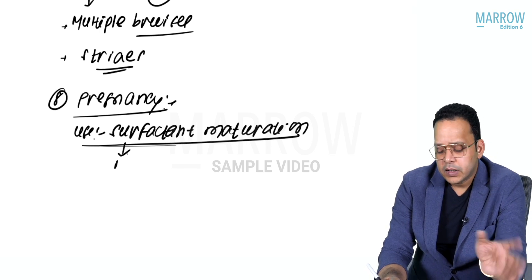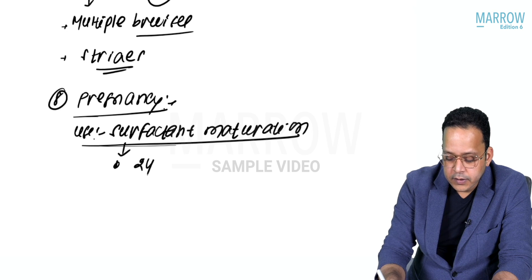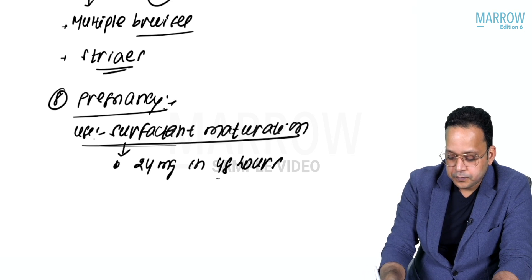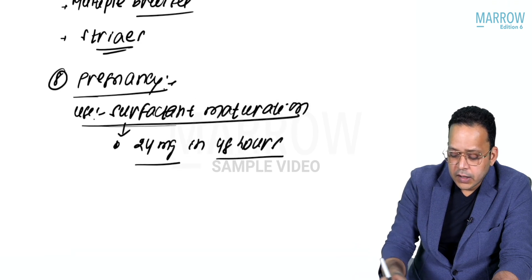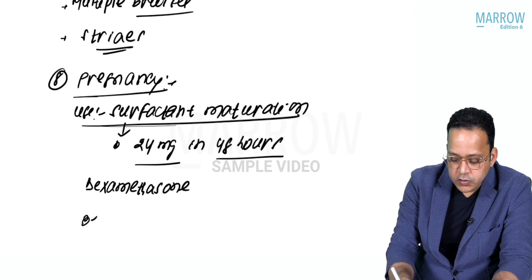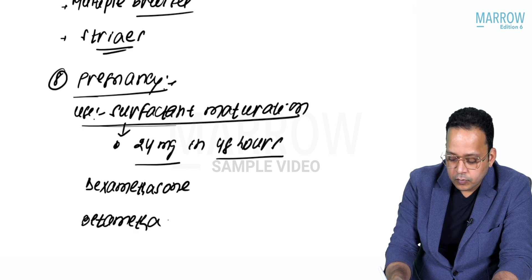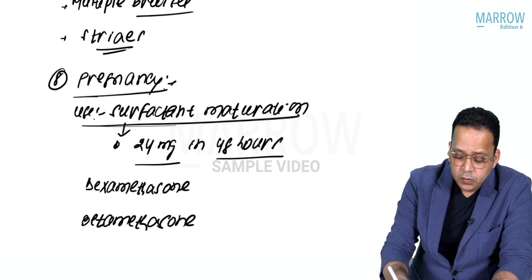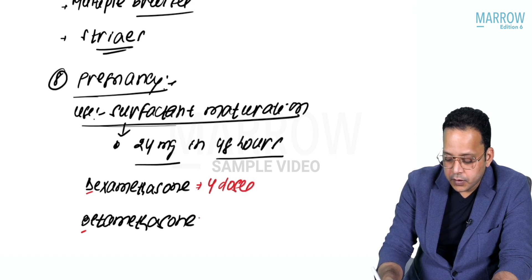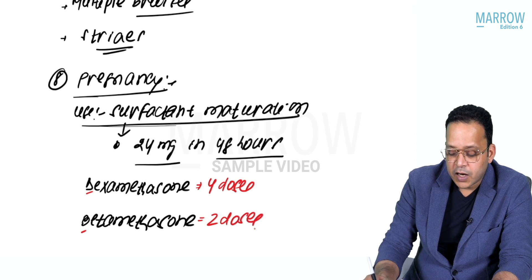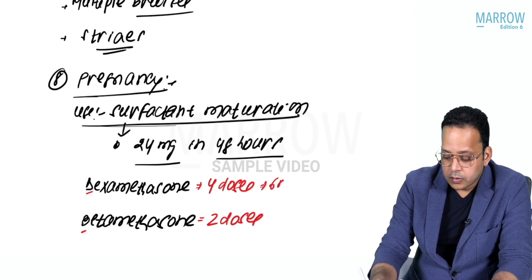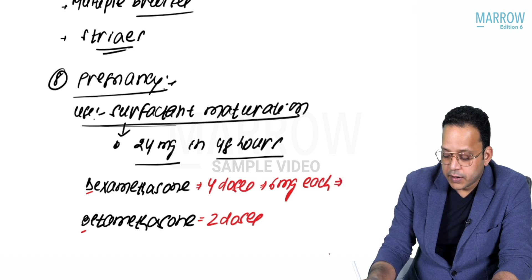The dose we're going to use: my target is 24 milligrams in 48 hours. I can give either dexamethasone or betamethasone. D is the fourth alphabet, B is the second alphabet, which means four doses are given here, two doses there. Four doses: 6 milligrams each dose.